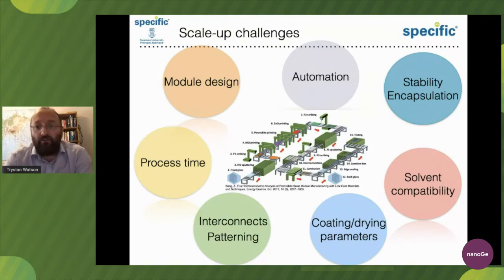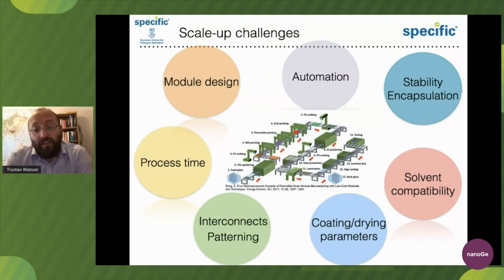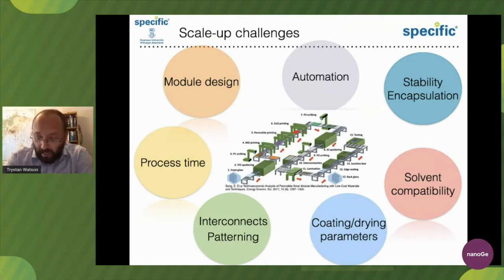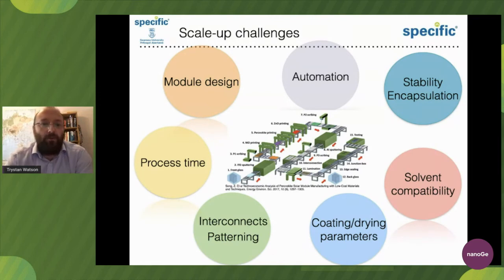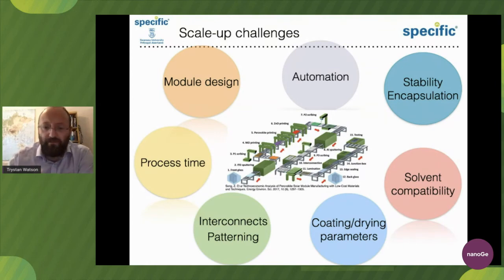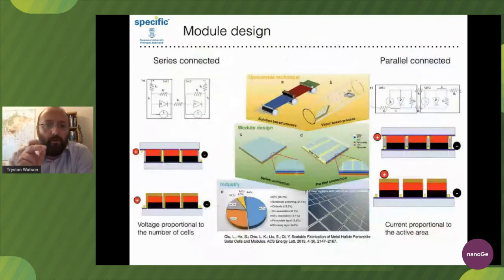We need to make sure that when we assess stability, we do it in a very structured way that everybody can understand. Solvent compatibility is important - we do not want to dissolve the underlayer when applying the hole transporter or electron transporter. A really nice challenge for engineers is that coating and drying parameters change every time you change your perovskite. We'll be seeing from Michael later some really interesting poly-elemental and multi-component perovskites, and what that does to our deposition methods is a great challenge.